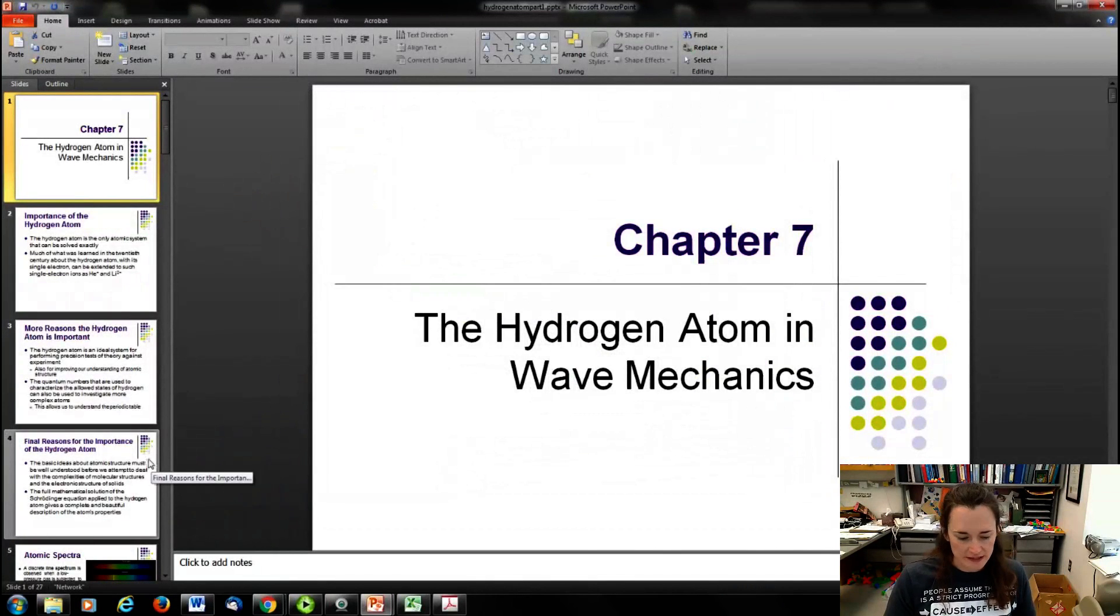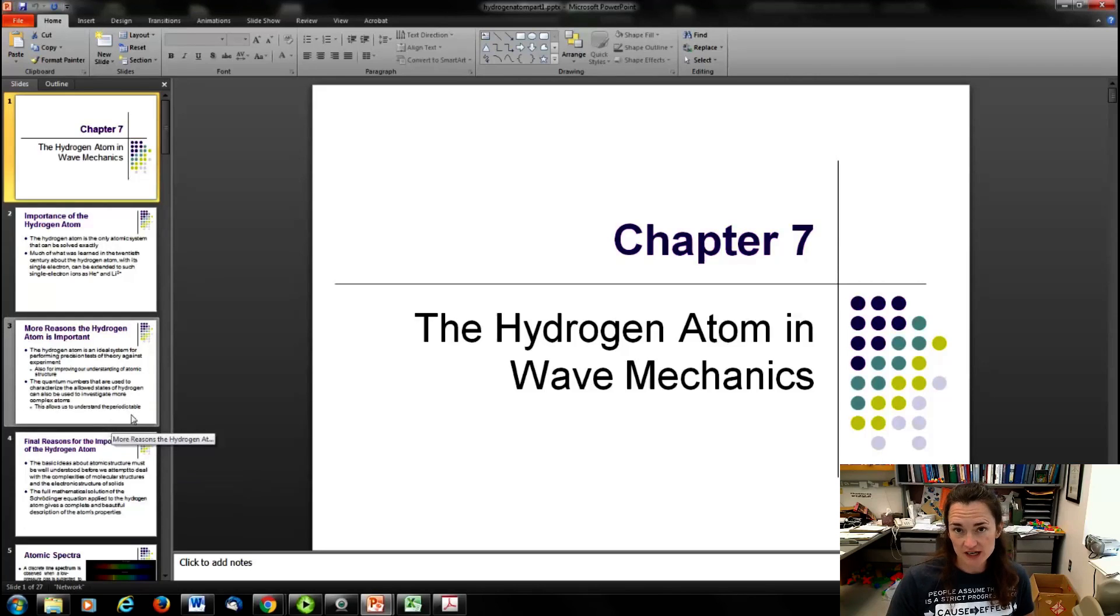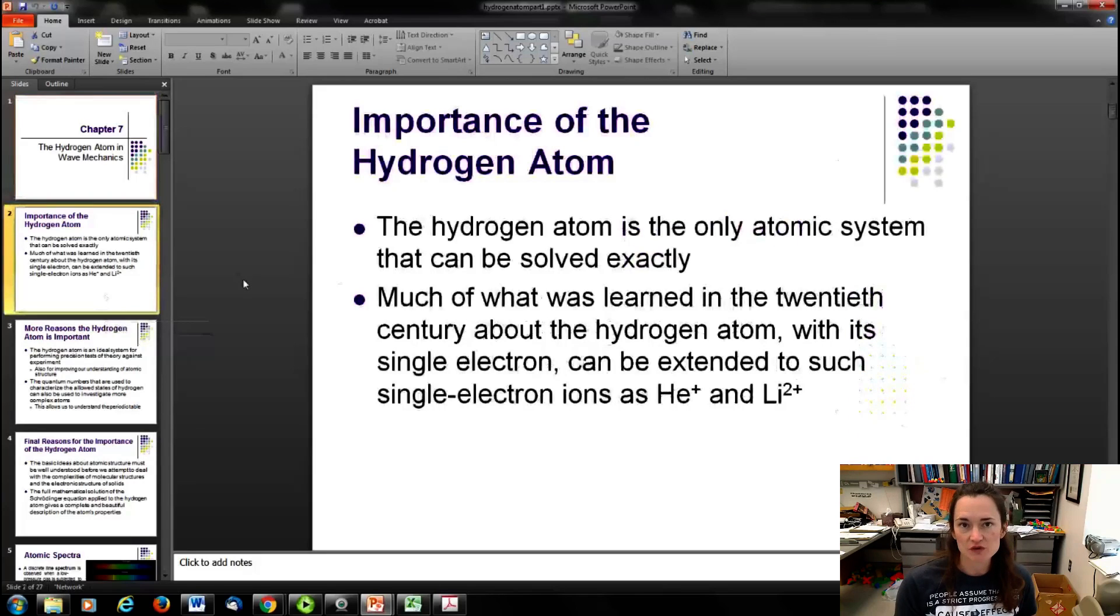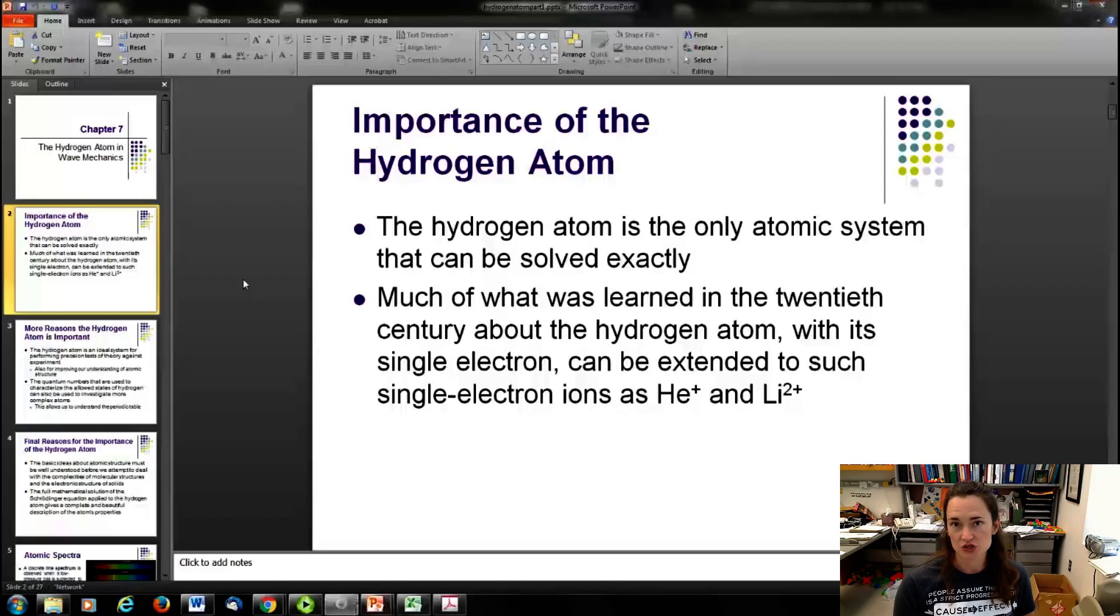Welcome to your first real lecture on physics for our online course. We're starting with chapter 7, which is the hydrogen atom in wave mechanics. To remind you of some things we learned in modern physics one, we're going to first cover the Bohr model of the atom, review it, and then talk about why there were holes in the Bohr theory and develop the quantum mechanical solution in very light detail since you guys aren't required to have differential equations.